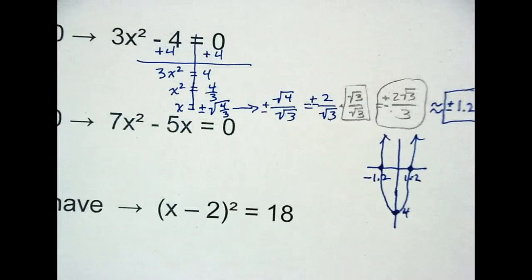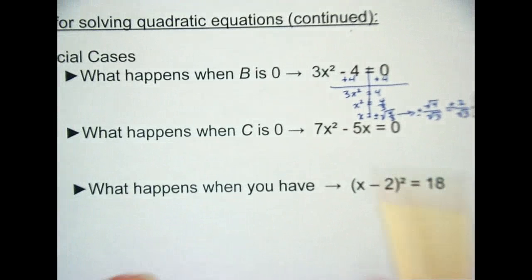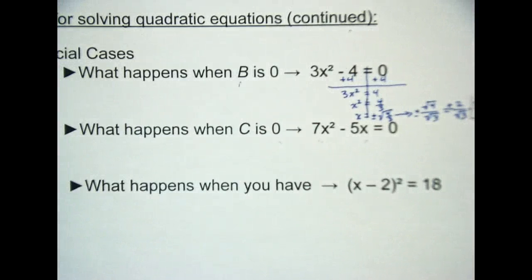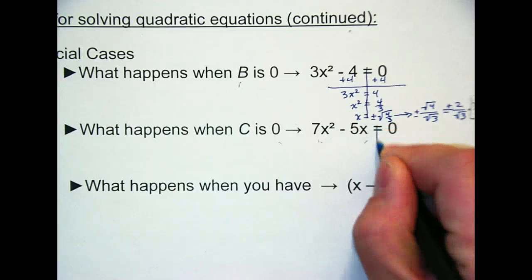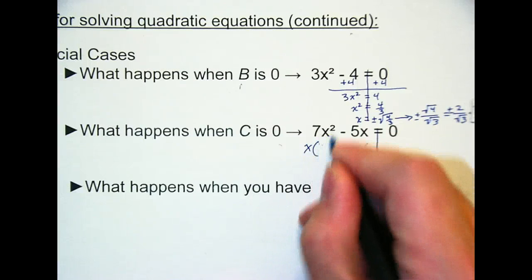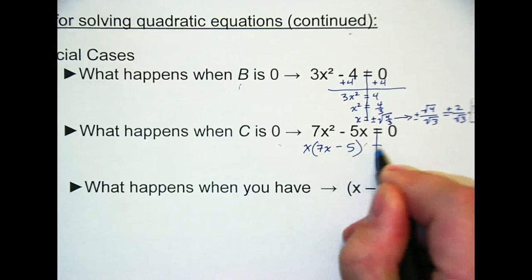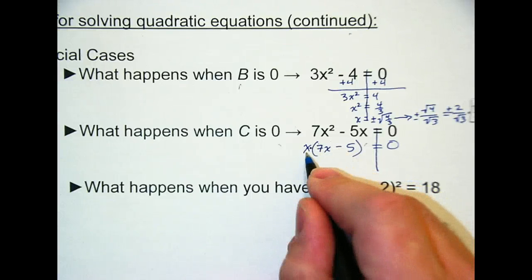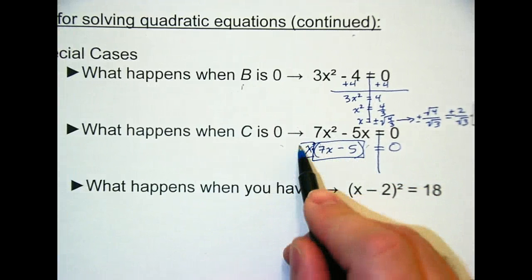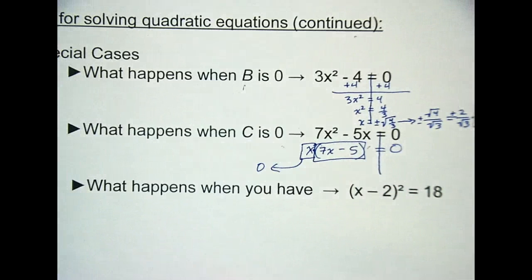Let's move on here. The next one, what happens when C is zero? So when you have binomials, where you only have two terms. Well, if C is zero, recall from yesterday we talked about taking out a greatest common factor. What comes out of both of those? 7X. And what times X makes 5X? Negative 5.